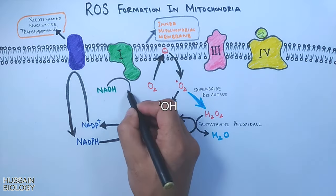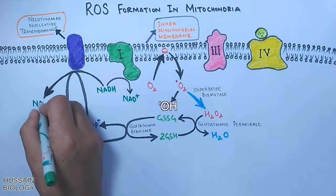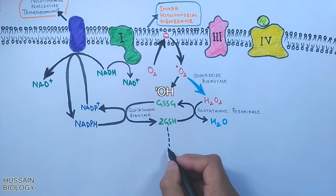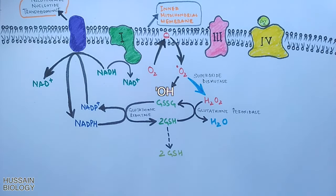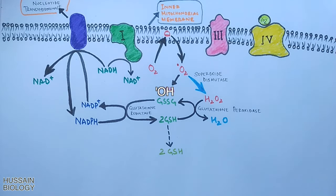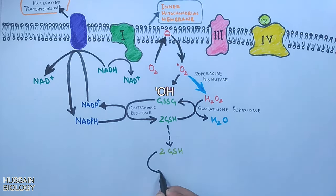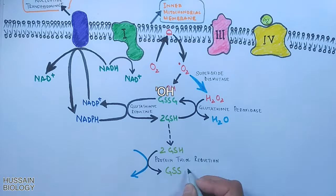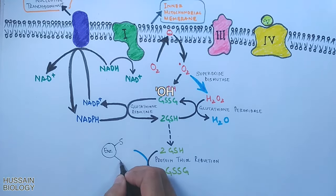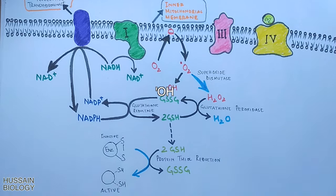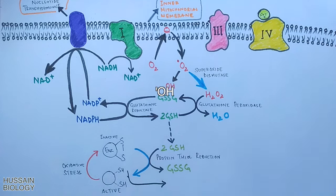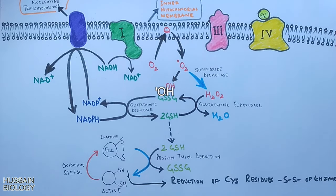Then we have another defensive mechanism where proteins or enzymes are kept in a reduced state. We see the reduced form of glutathione gets oxidized into GSSG and in that it reduces the oxidized cysteine residues of proteins and enzymes, thus acting as a defensive mechanism against oxidative stress. So this is how ROS are generated and then neutralized in the defensive process.